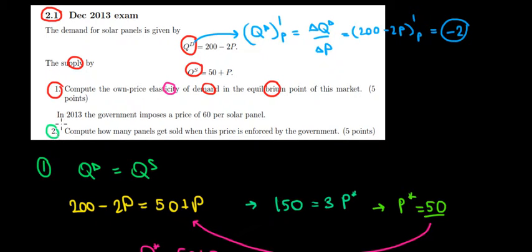Let's have a look at question two in this video. Suppose that the government imposes a price of 60 per panel. So there is this price limitation. How many panels are going to get sold at this price level?